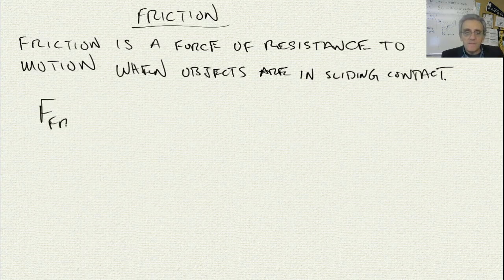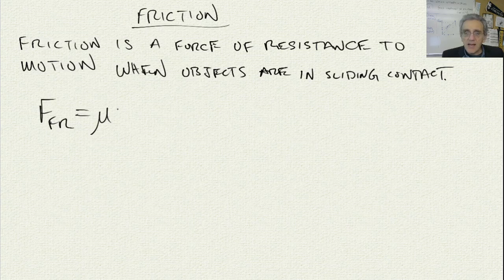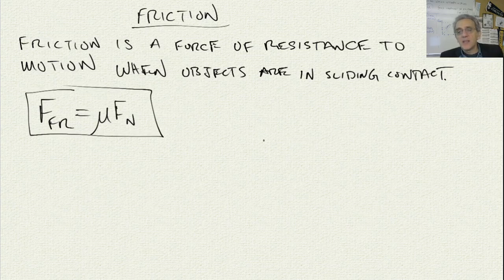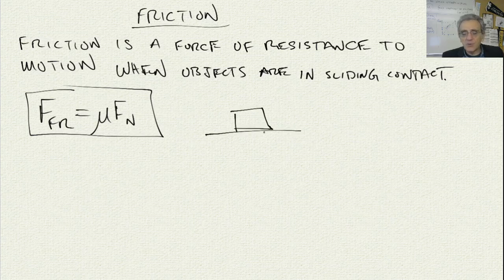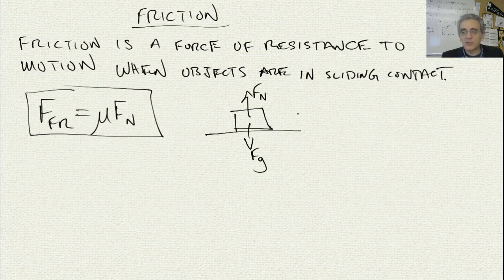The friction equation states that friction is equal to mu times normal force. This is the general form of the equation. The reason we use normal force is because on a flat horizontal surface — which is mostly the type of questions we do in this course — we have gravity going down and normal force going up.